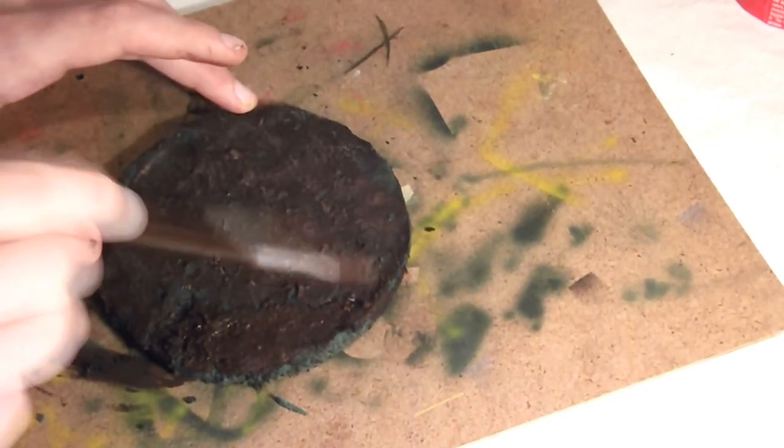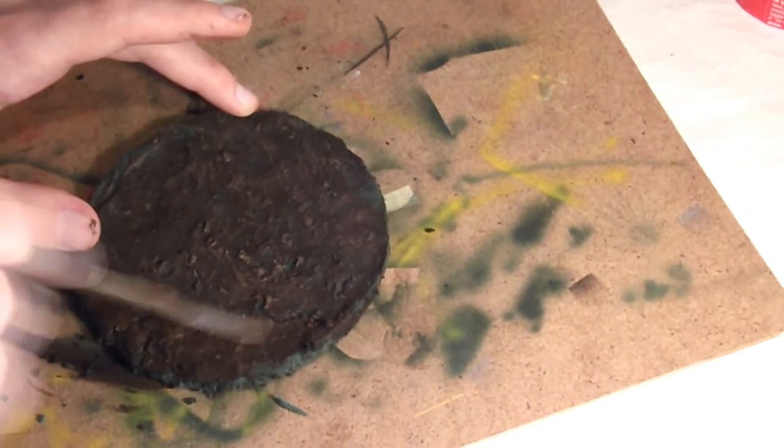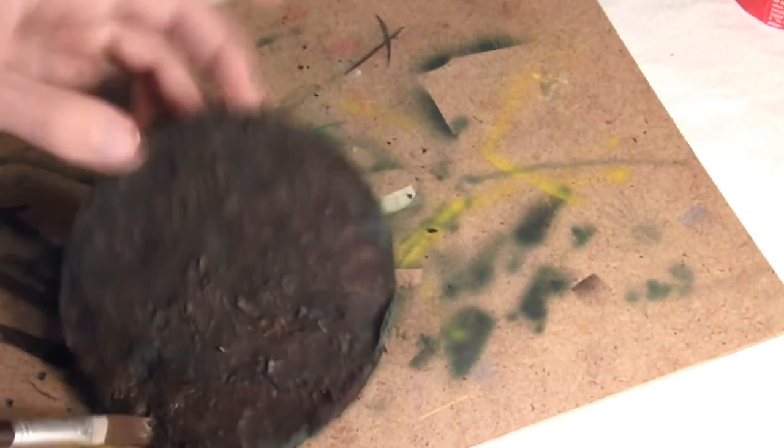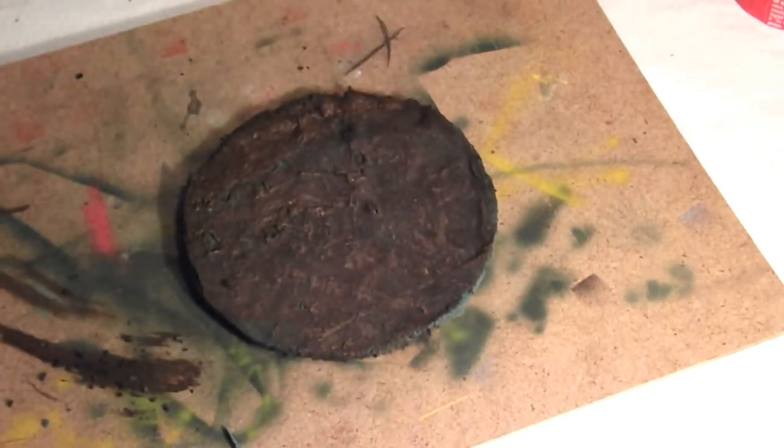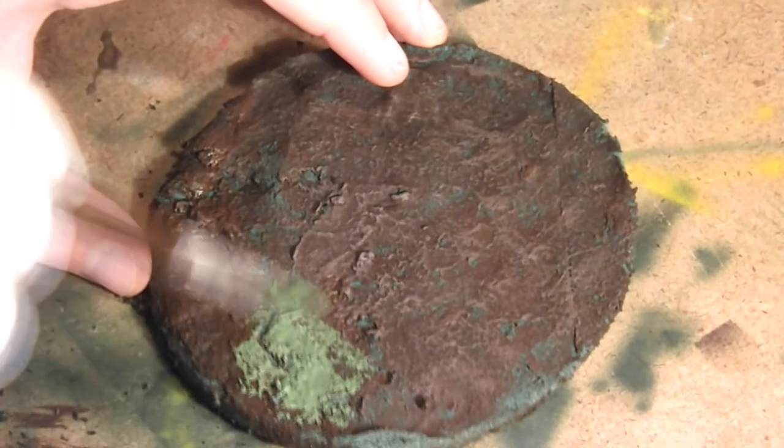Now I will add some dry brushing. I mixed green paint with glue. Later I'm gonna be sprinkling some grass on it.